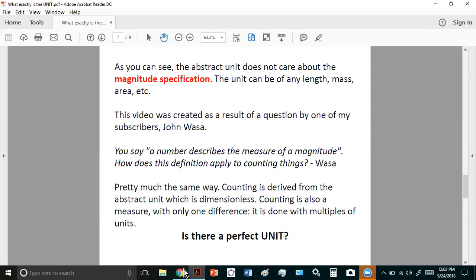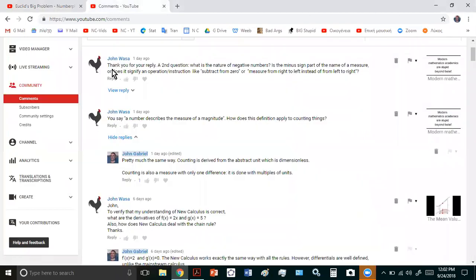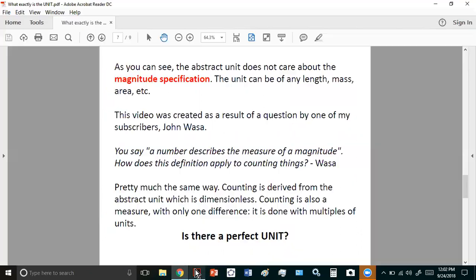This video was created as a result of a question by one of my subscribers, John Wasser. He asks, you say a number describes a measure of a magnitude. How does this definition apply to counting things? Well, pretty much the same way, counting is derived from the abstract unit, which is dimensionless. Counting is also a measure with only one difference. It is done with multiples of units, those things that you call the natural numbers or the whole numbers or the counting numbers.